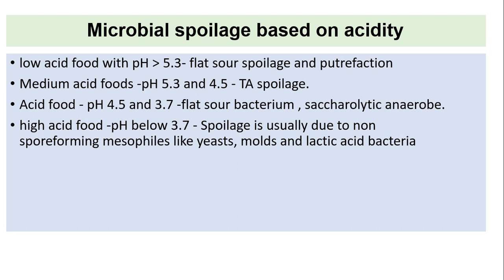Microbial spoilage based on acidity: low acid foods with pH above 5.3 are subject to flat sour spoilage and putrefaction. Medium acid foods with pH between 5.3 and 4.5 are subject to TA spoilage. Acid foods with pH between 4.5 and 3.7 are affected by flat sour bacteria and saccharolytic anaerobes. High acid foods with pH below 3.7 are usually spoiled by non-spore-forming mesophiles like yeast, molds, and lactic acid bacteria.